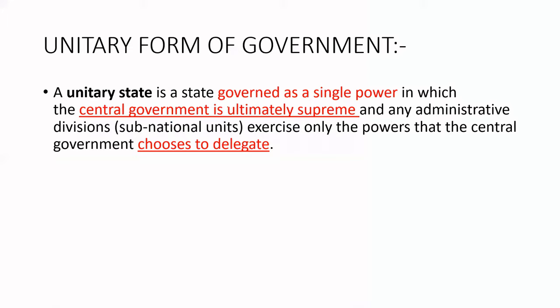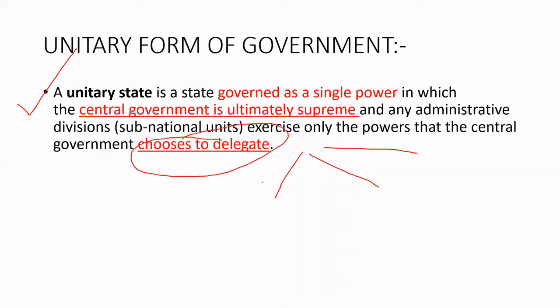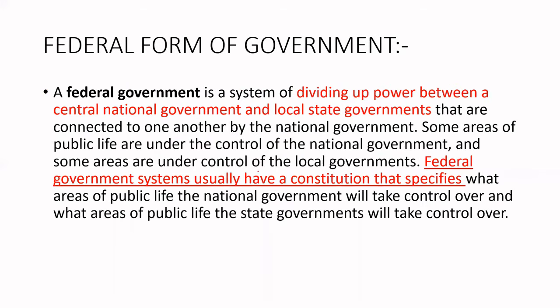The unitary form of government is governed by a single power, where the central government is the ultimate supreme, who has all the powers to delegate its work to whatever local authority it wants. That means, the one who chooses to delegate — this power is only in the center. Whereas, in the federal form of government, the power is already divided between the center as well as the state government.